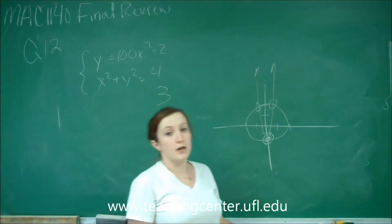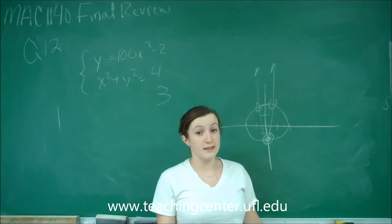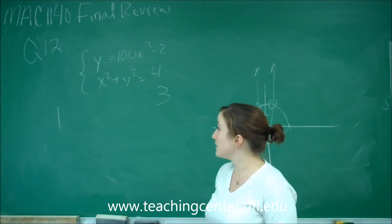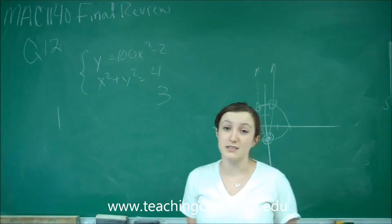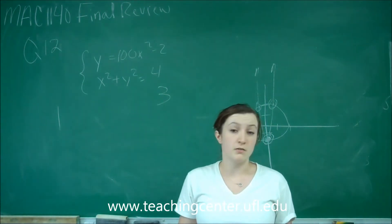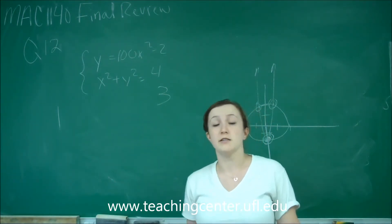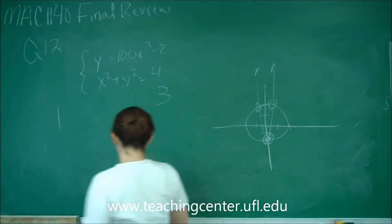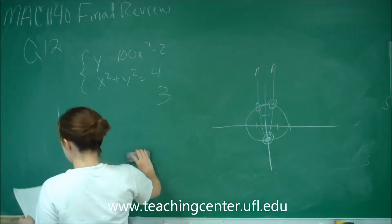And the reason we wanted to draw a picture for this, besides the fact that they told us, is because subbing in 100x squared minus 2 in for y is going to give us really ridiculous numbers. We weren't looking to solve to see what the solutions were. We just wanted to know how many there were. And that's why plugging it in would be a little much.